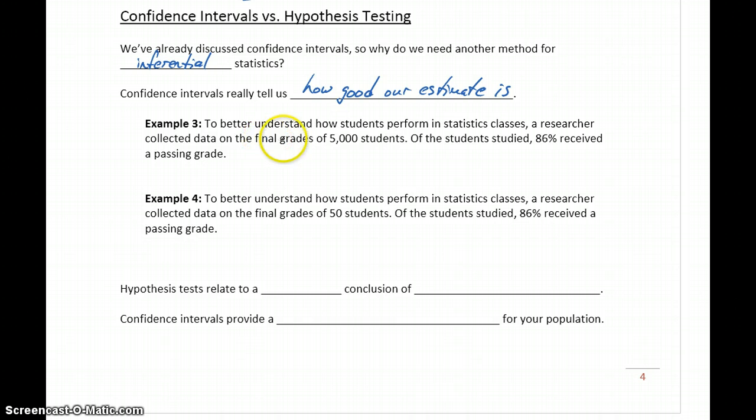For instance, in Example 3, to better understand how students perform in a stats class, a researcher collected data on the final grades of 5,000 students. Of the students studied, 86% received a passing grade. In this case, if we constructed a 95% confidence interval, that would range from 0.85 to 0.8694.